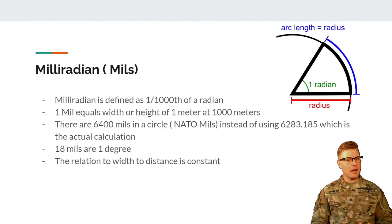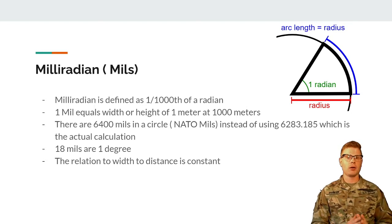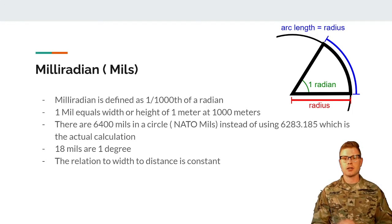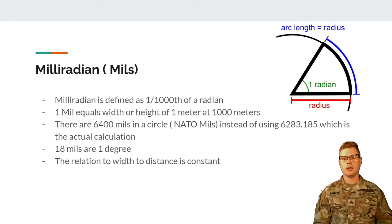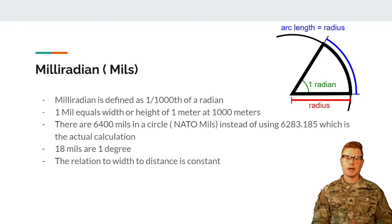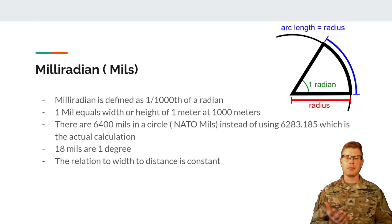I just wanted to give the definition of what a mil comes from. A mil is a milliradian, defined as one one-thousandth of a radian. As you can see on the right side of the screen, it shows how we get a radian versus radius and arc length. One mil equals the width or height of one meter at a thousand meters, and there are 6,400 mils in a circle — that's NATO mils. Other organizations may use 6,283.185, but 6,400 is what we're going to use. There are 8 mils in one degree.